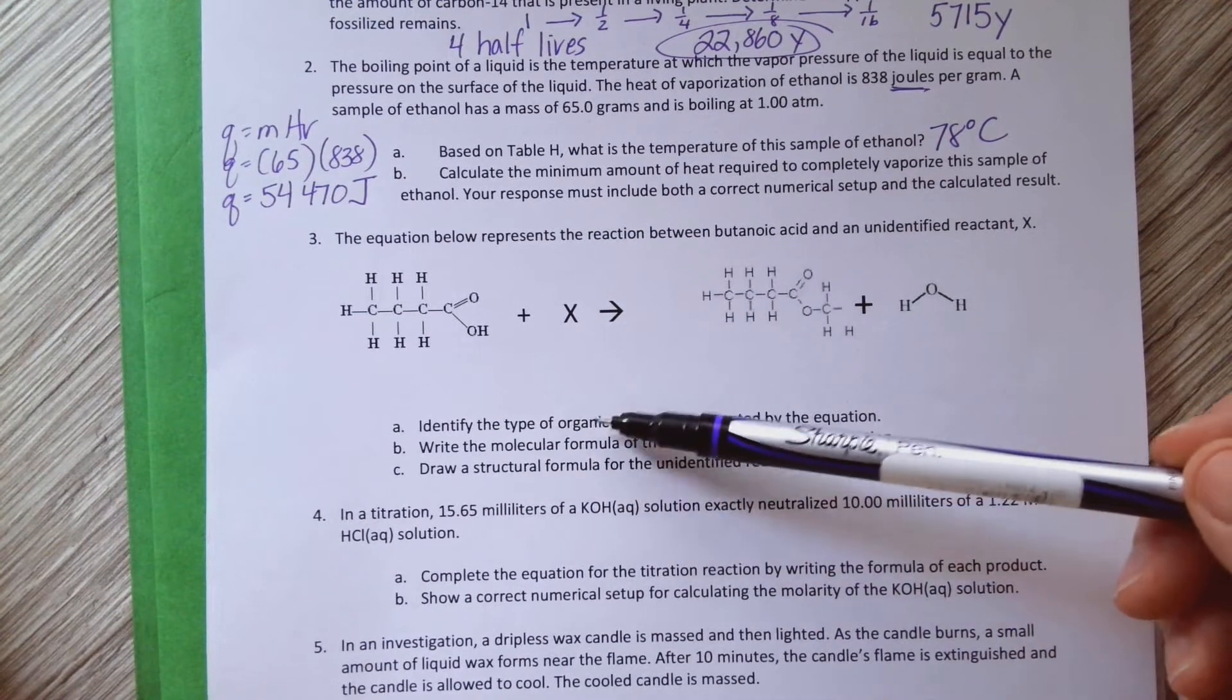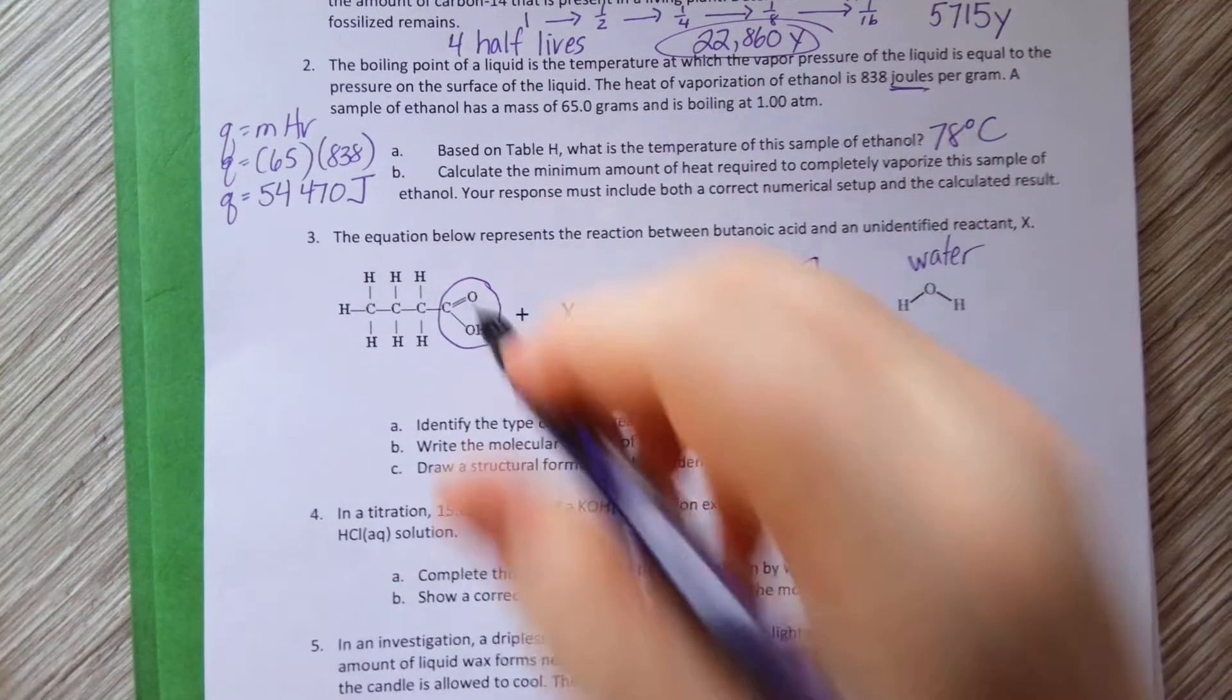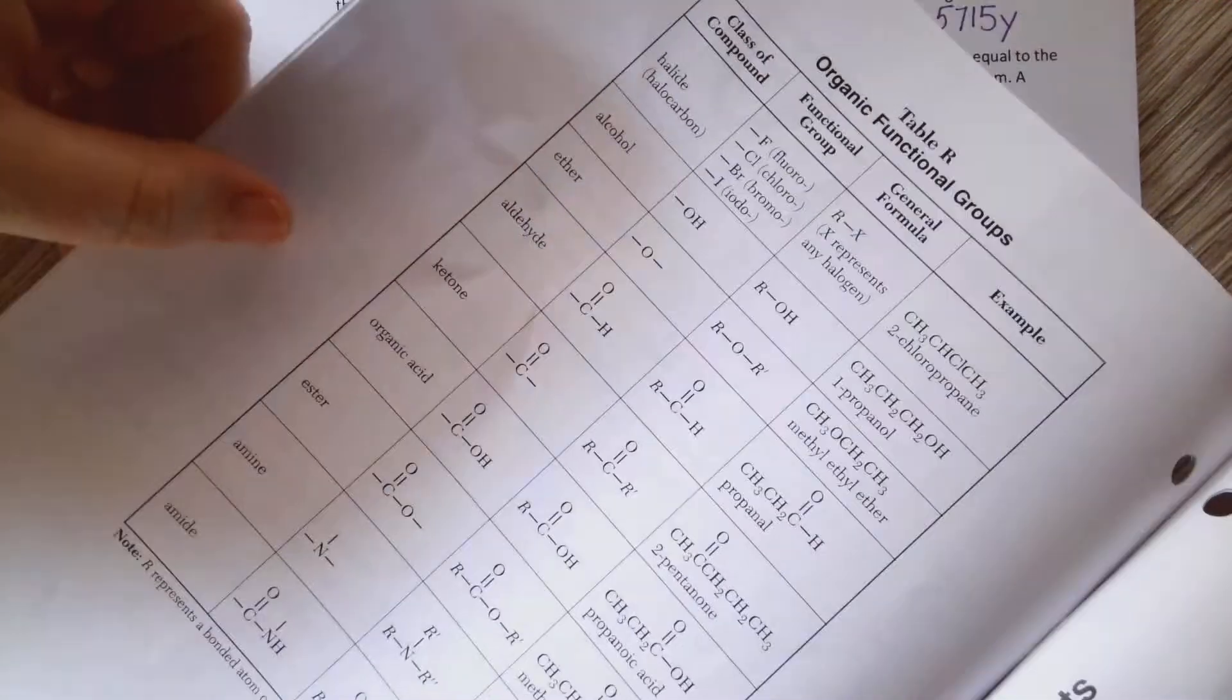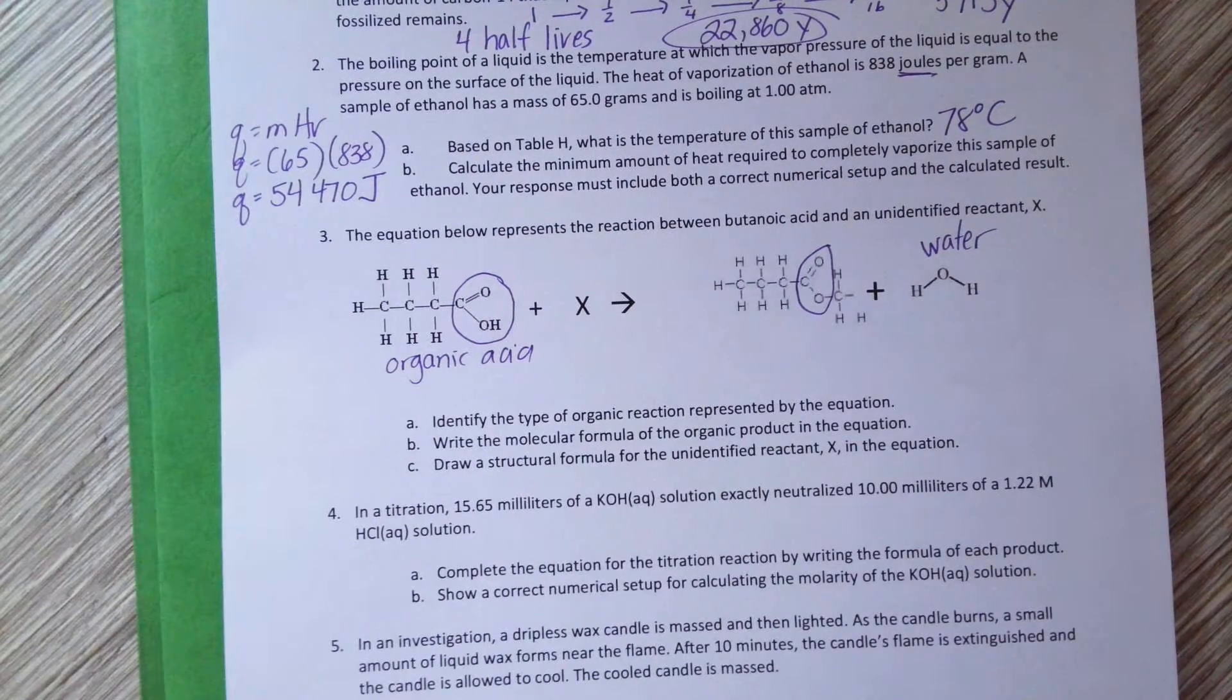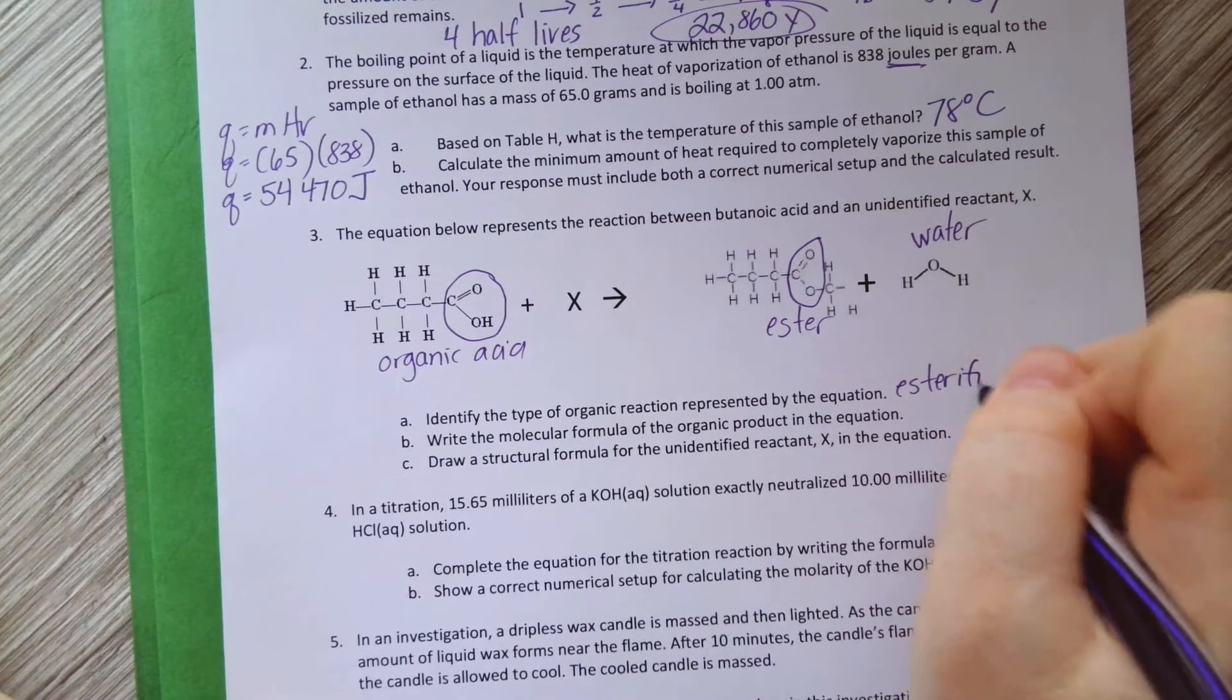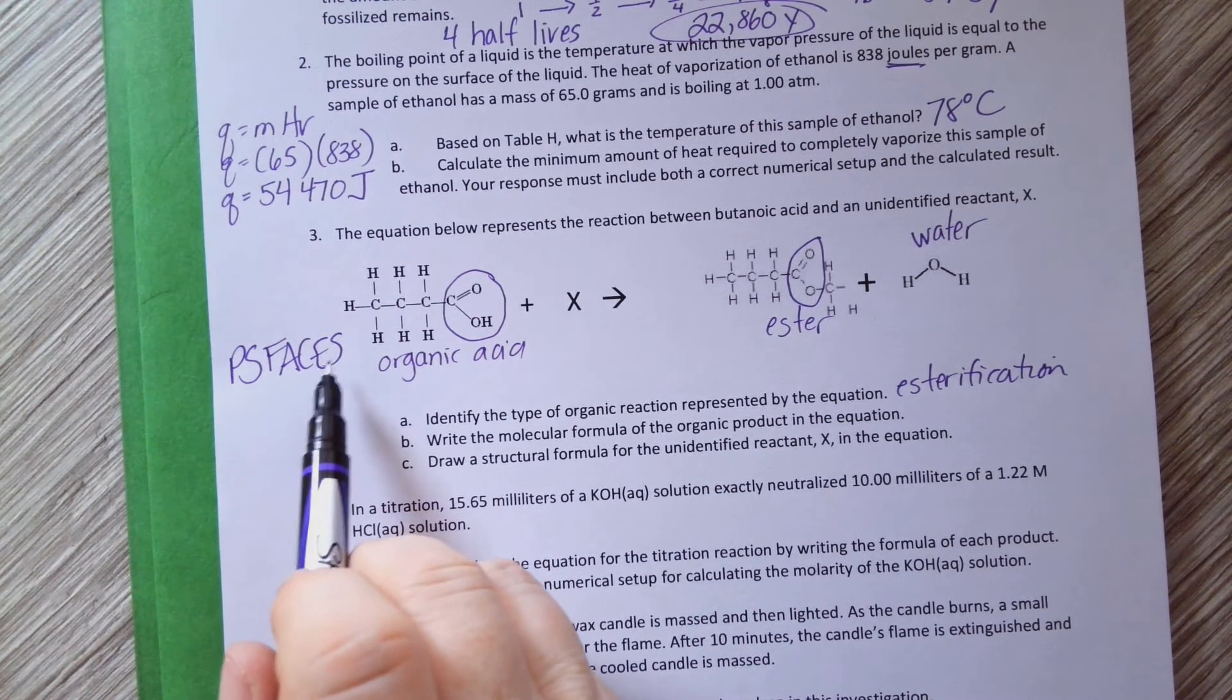Okay, so here's a reaction. Identify the type of organic reaction. So let's look for functional groups. Here's a functional group, here's a functional group. Well, this is water. Let's go and look at table R and see what these are. So COOH, that's an organic acid. And this has C-O-O, that's an ester. Oh brilliant, it made an ester. It's on the product side. That's esterification. Right? PS faces, those are your options: polymerization, saponification, fermentation, addition, combustion, esterification, substitution.